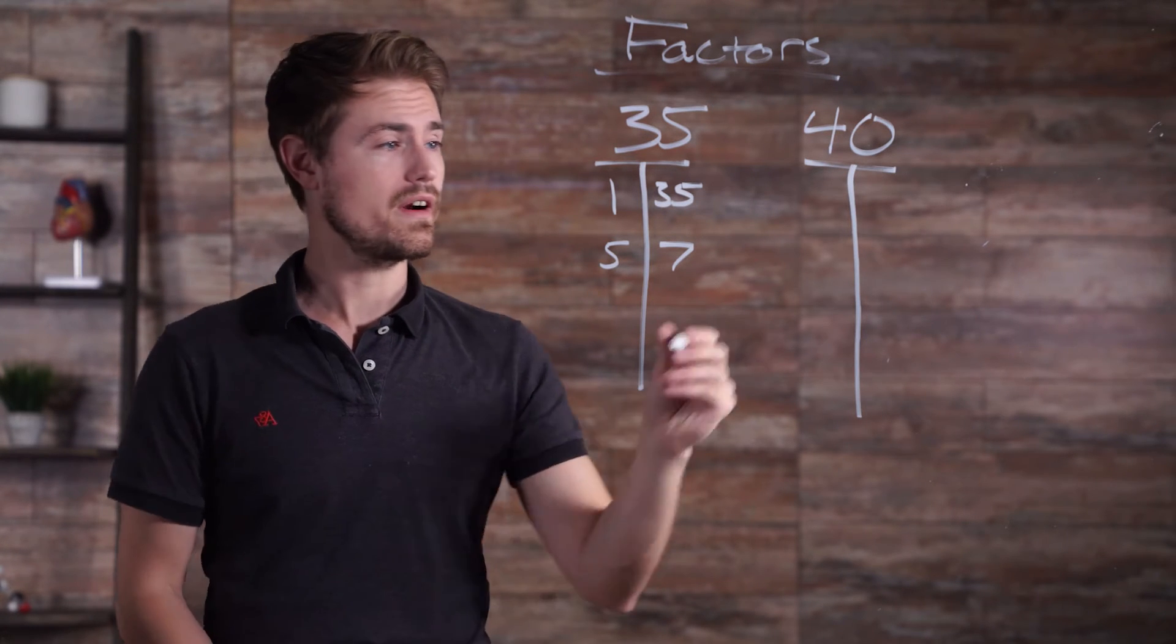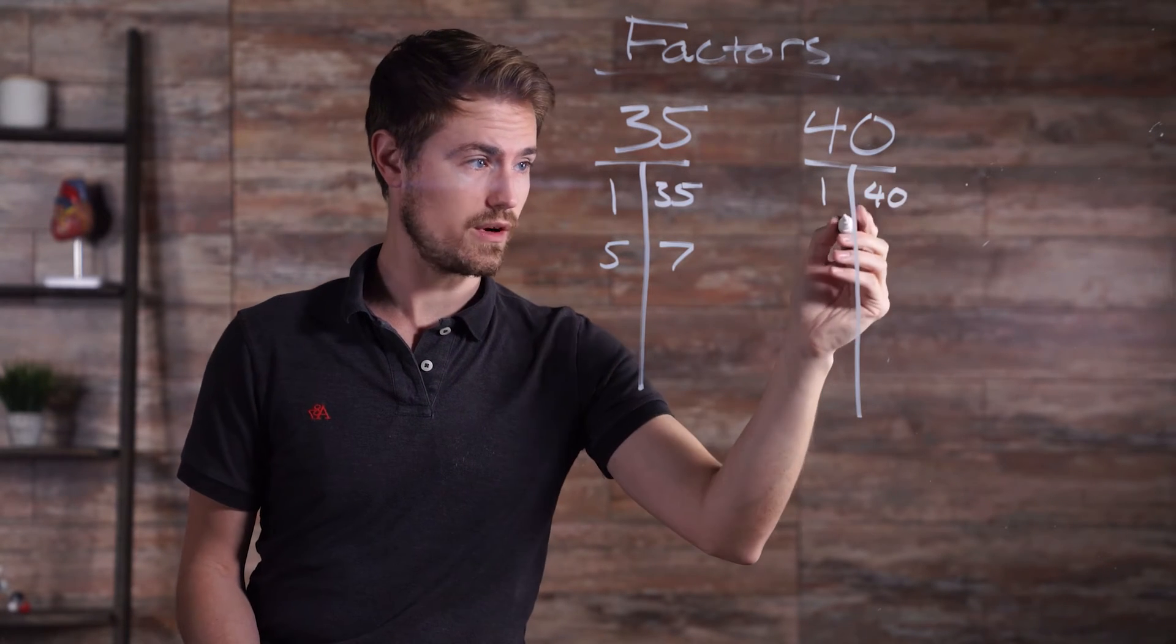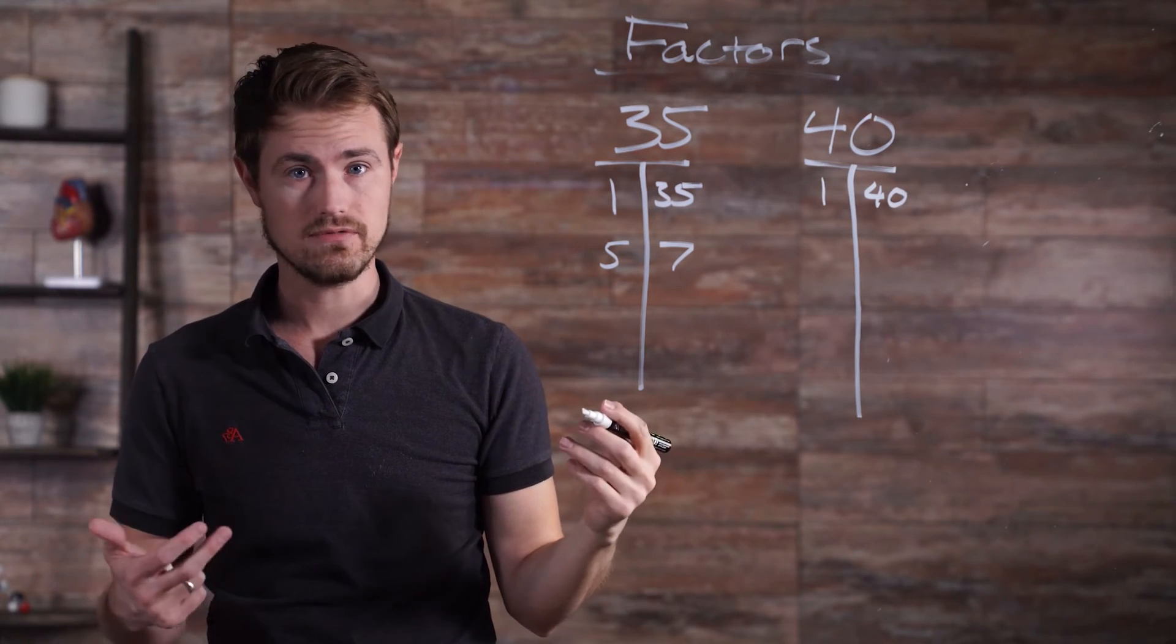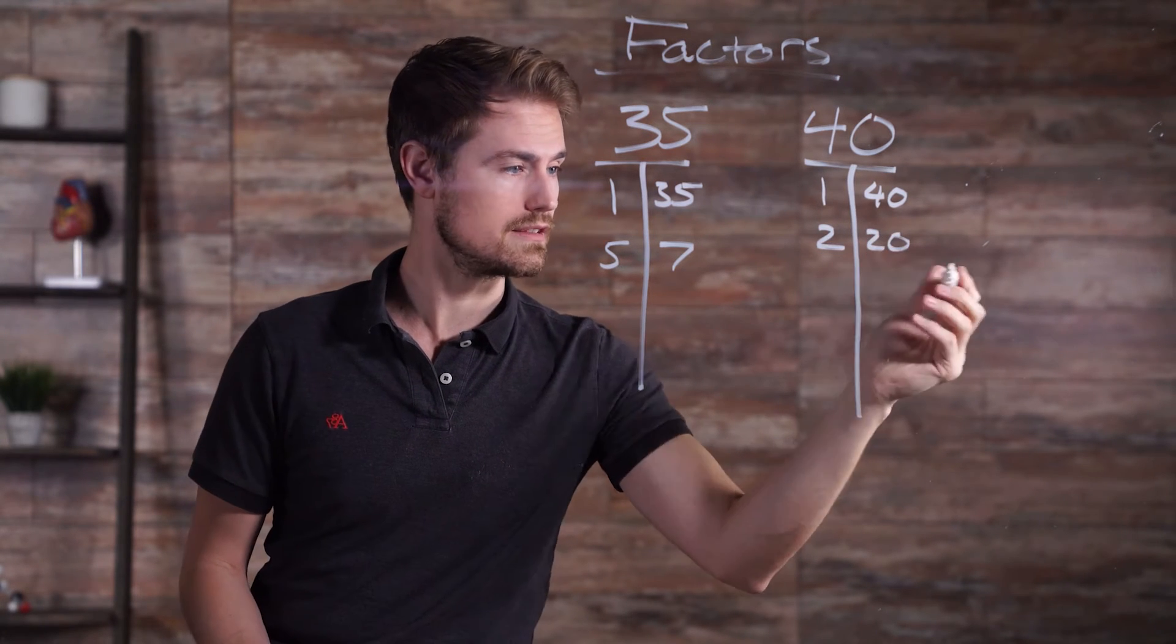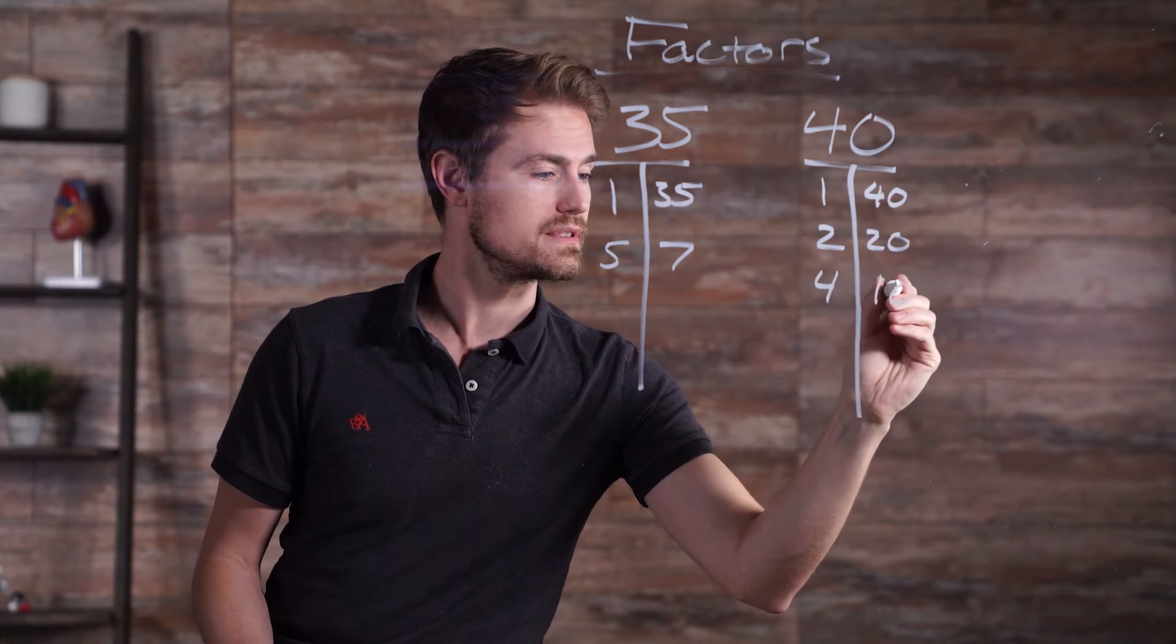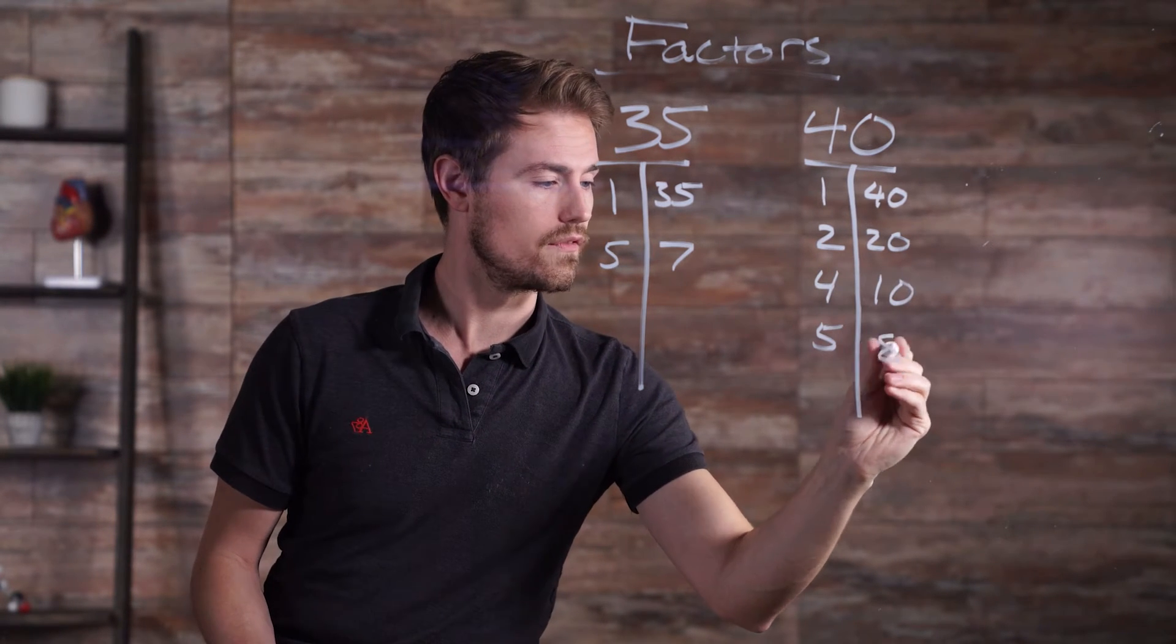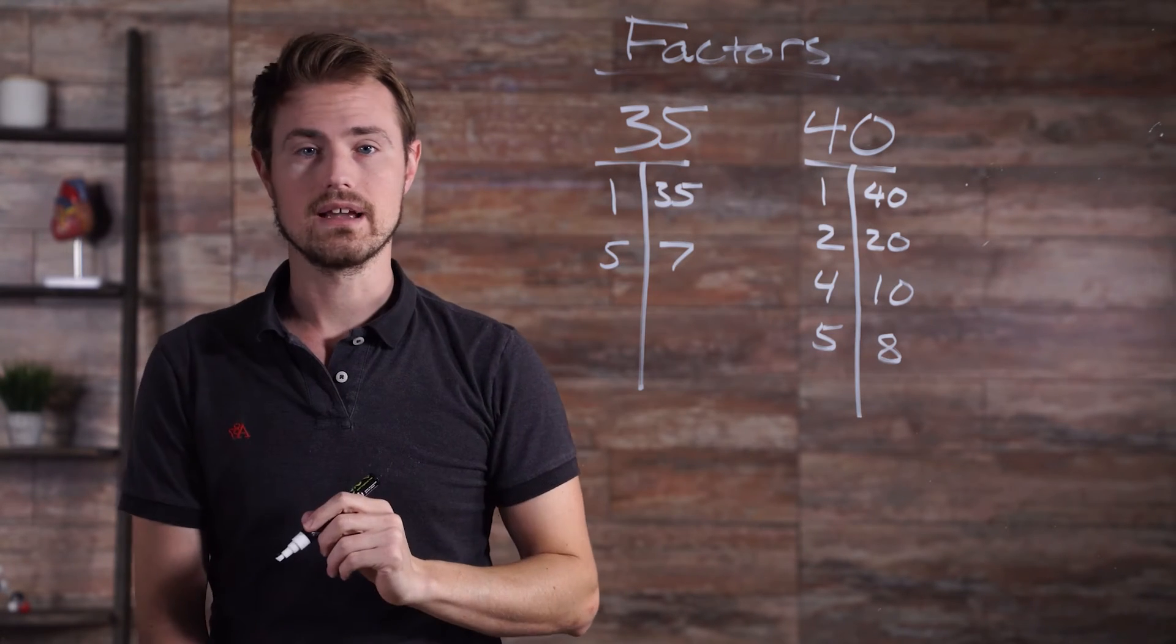Let's move over to 40. For 40, we have 1 and 40, because 40 times 1 is equal to 40. We also have 2 times 20, because when you multiply those, you get 40. We also have 4 times 10 and 5 times 8, all of which end up equaling 40.